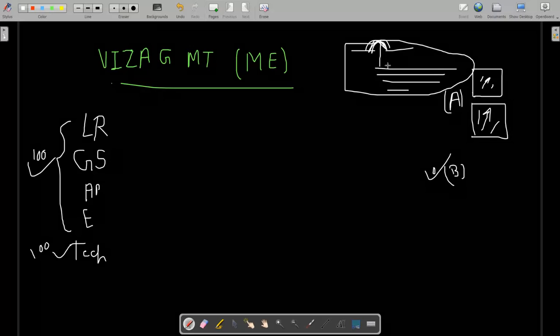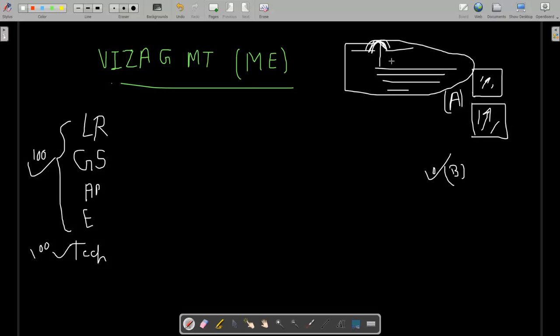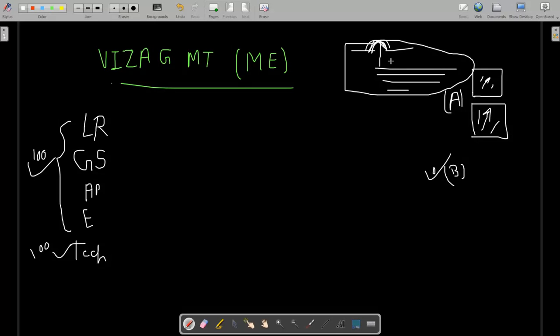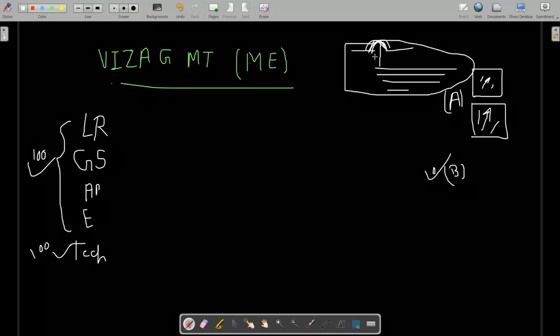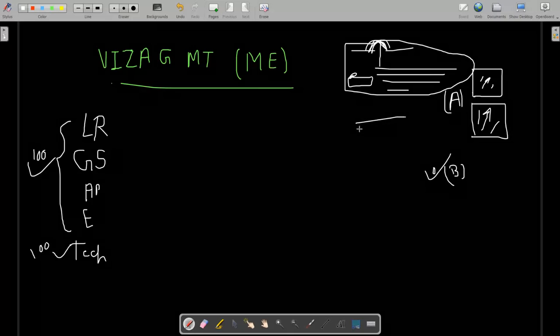In every exam like GATE, Coal India Limited, RCFL, and NLC exams, the pattern is you have to select the medium of your language before starting the paper and you can switch your language at any time in the paper. For example, if there are issues reading a question in English and you cannot understand, you can switch for that particular question also.